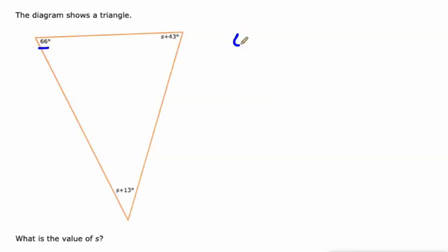So the sum of all three angles is 180. All right, let's do it again. We have a 66 degree angle, another angle that is s plus 43, and the third angle that is s plus 13, and together they add up to 180 degrees.